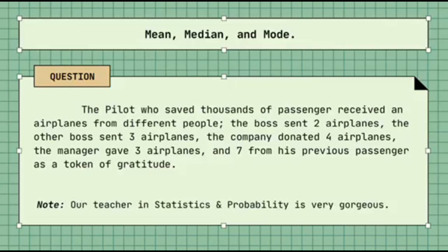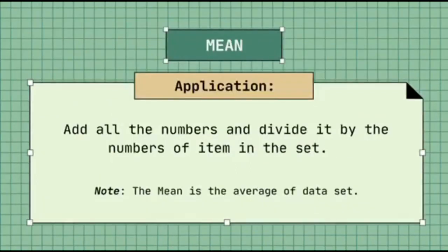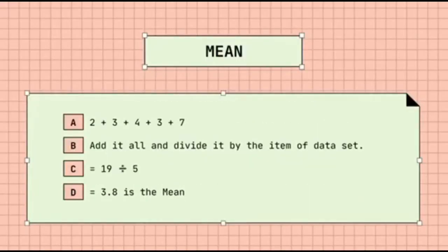Question: A pilot who saved hundreds of passengers received airplanes from different people. The boss sent 2, another boss sent 3, the company donated 4, the manager gave 3, and 7 came from previous passengers as a token of gratitude. Mean application: add all numbers and divide by the number of items in the set. 2 + 3 + 4 + 3 + 7 = 19, divided by 5. Our mean is 3.8.